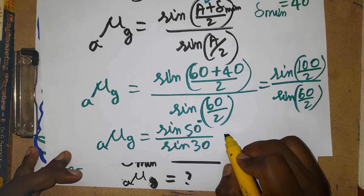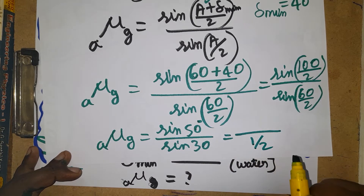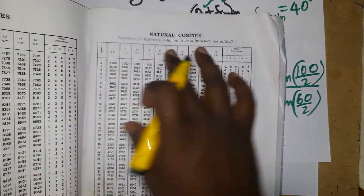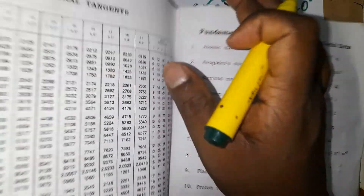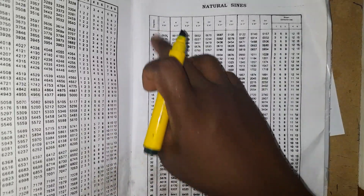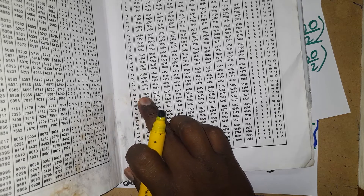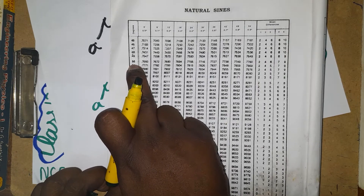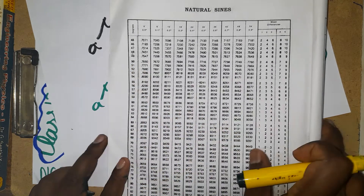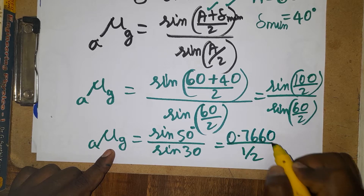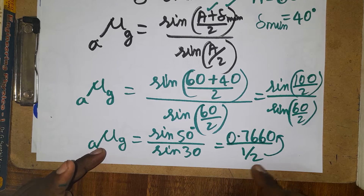sin(30°) = 1/2, which we know easily. For sin(50°), I am going to use the log book — the sine table. Looking up 50 degrees in the sine table: the answer is 0.7660. And looking up 30 degrees: we get 0.5, which confirms sin(30°) = 1/2.